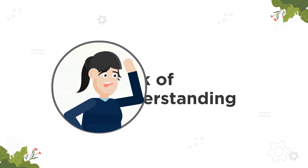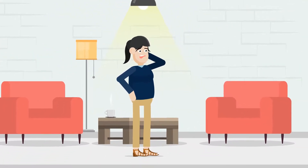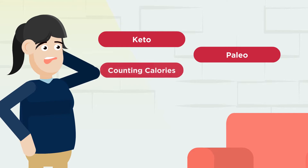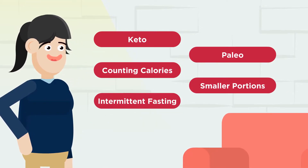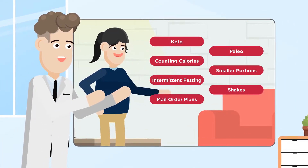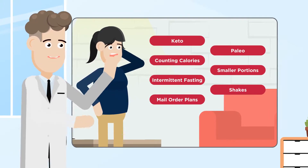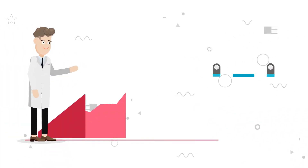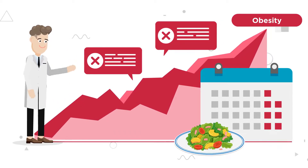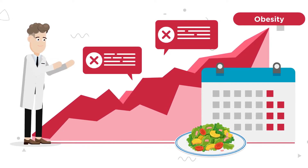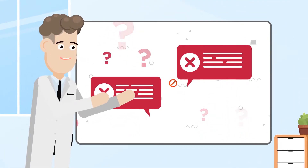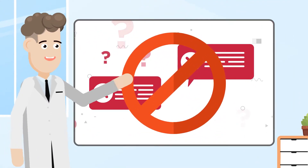The second reason people become overweight or obese is lack of understanding. Maybe you've had the best of intentions and tried keto, paleo, counting calories, smaller portions, intermittent fasting, shakes, mail order plans, and all sorts of gimmicks, thinking that you can lose weight or maintain a healthy weight. But in reality, you were given bad information. For decades, we've been given bad advice and misinformation on how to eat properly, and that's why our obesity and overweight rates are at record highs. This misinformation has led to a lot of confusion. We can clear up that confusion and finally give you the understanding that you've been missing.